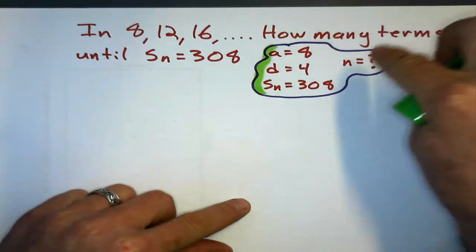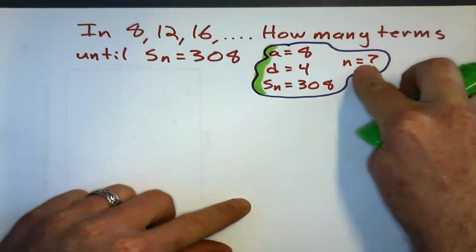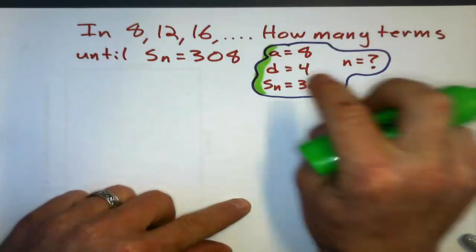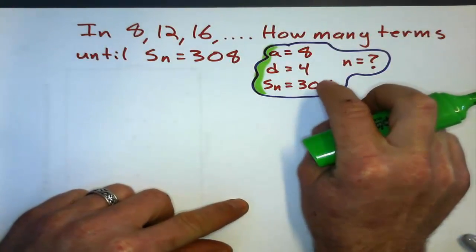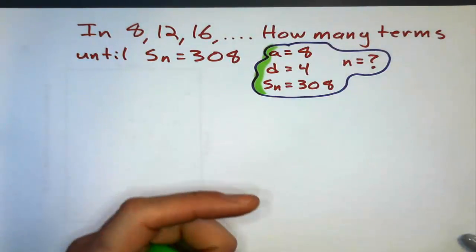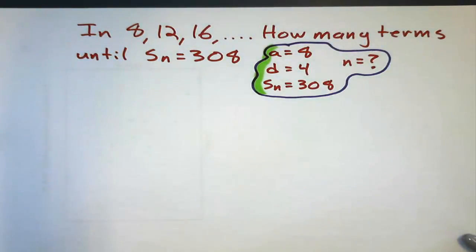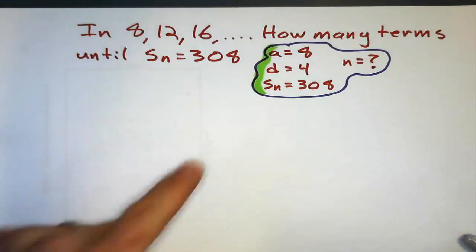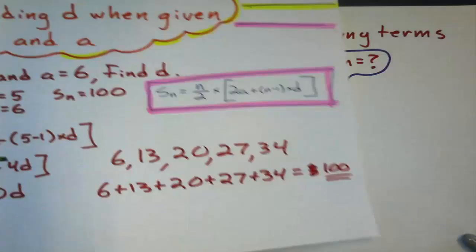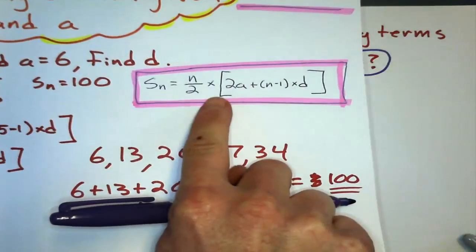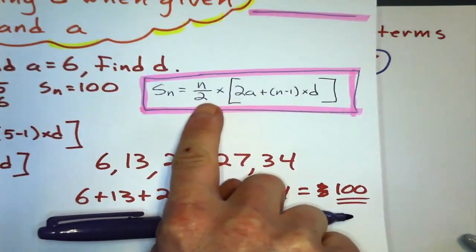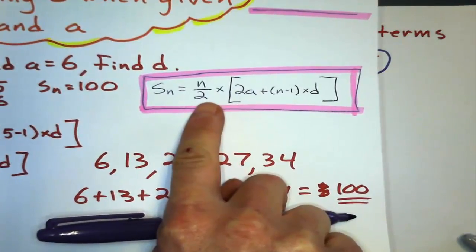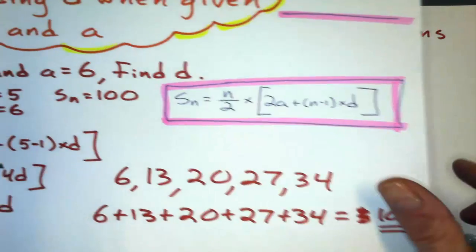Here's what you're given, here's what you need to find out. Substitute it into the formula, and we're going to solve for n. But it's hard, because it's going to turn into a quadratic. So the formula — we're using this one again.